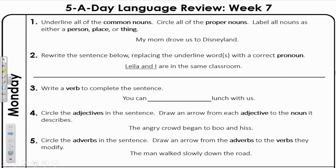I see one common noun — mom. It is not capitalized, so that is a common noun that should be underlined. There is one more noun that is capitalized, so it's a proper noun and should be circled. It's Disneyland. Mom is a person and Disneyland is a place.